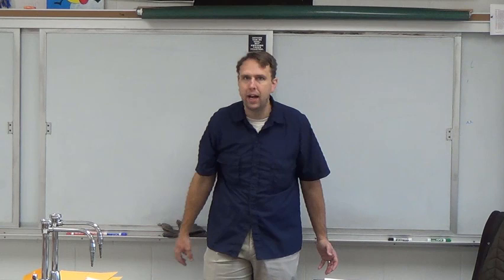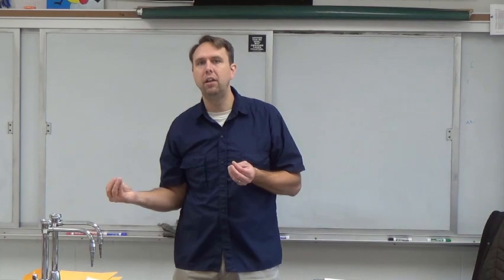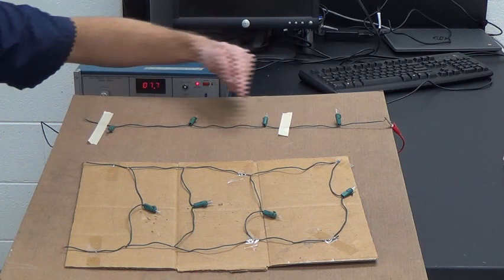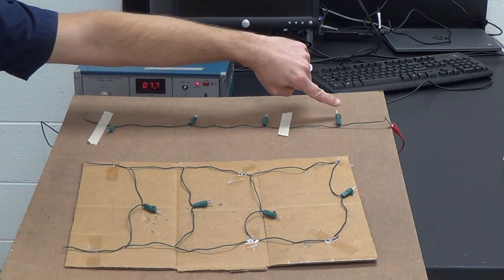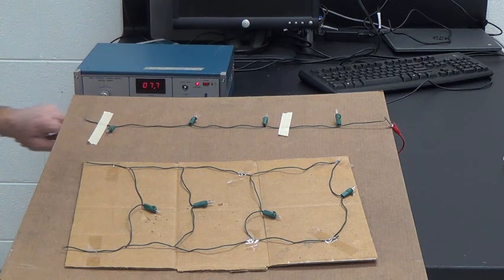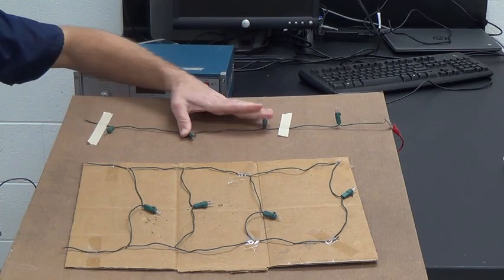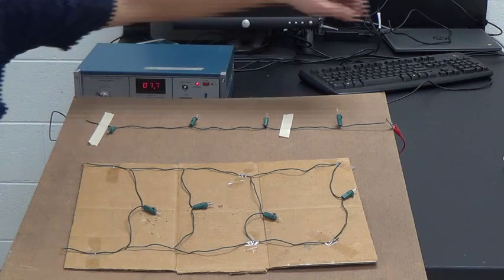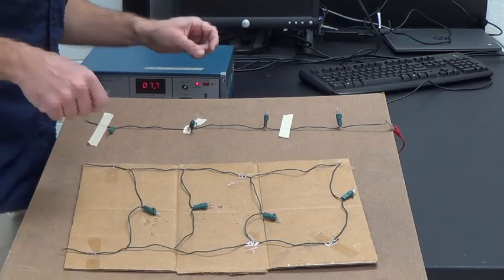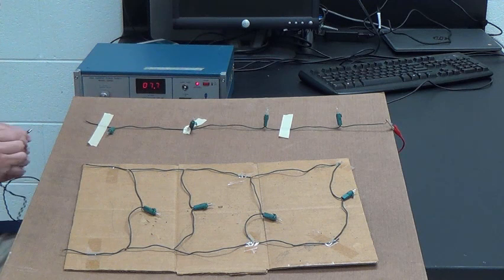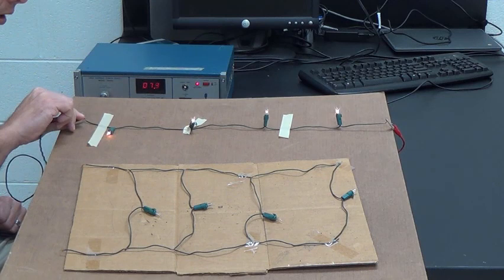I have two circuits here. This one is a series circuit. Notice there's one path. The electricity can come through this wire, go through this light bulb, through this one, through this one, and then through this one. And then it will leave through this wire. Now, right now, it's an open circuit because I haven't hooked up my final wire here. We have these light bulbs, and they're in series because there's only one path for the current to take. Now, when I complete the circuit by closing it by adding my negative here, notice what happens. All the light bulbs come on.